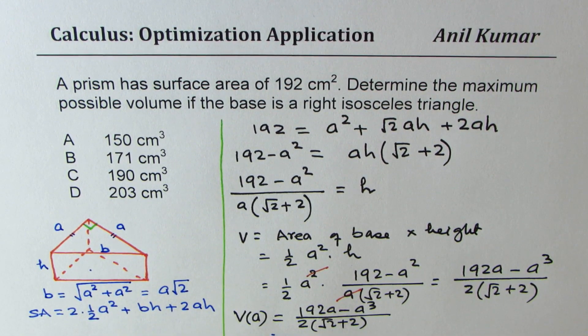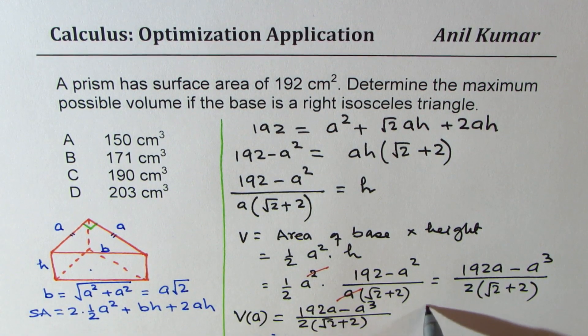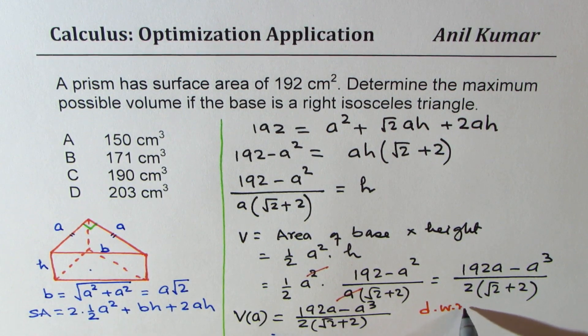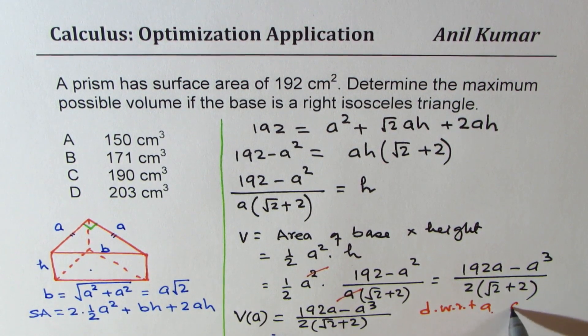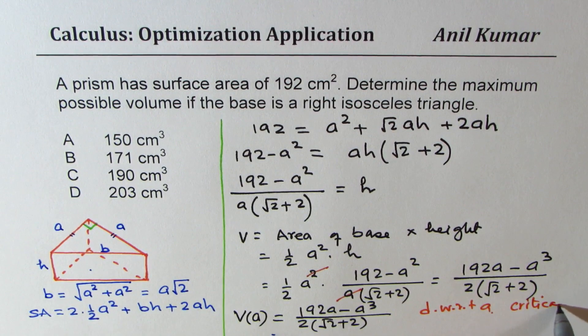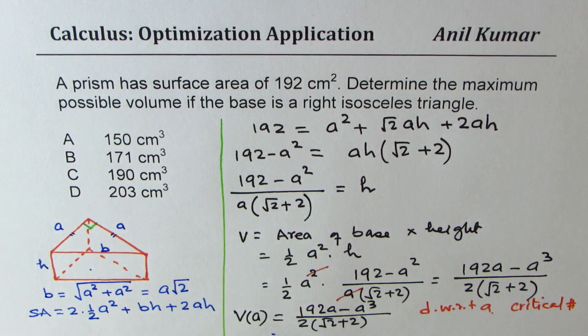Now to find the maximum volume we can always differentiate this with respect to a. So we will take derivative with respect to a to find critical number. So let's do it in the next page.